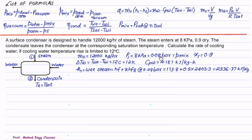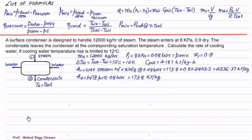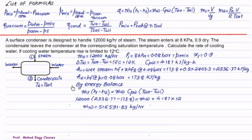Since the initial condition of the steam is 0.08 bar and the dryness fraction is 0.9, we find the enthalpy at wet steam, given by H = HF + X·HFG at 0.08 bar. Using the steam table, this value is 173.8 + 0.9 × 2403.3 = 2336.77 kJ/kg. The condensate enthalpy H2 equals HF at 0.08 bar, which is 173.8 kJ/kg.